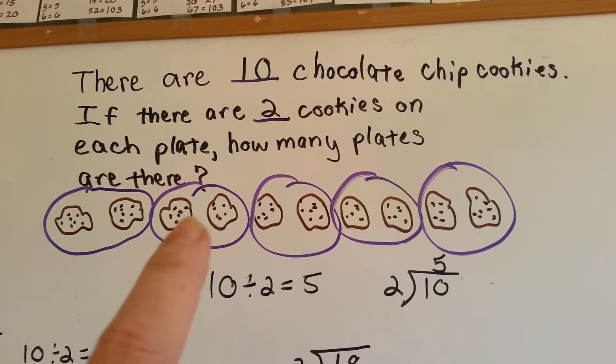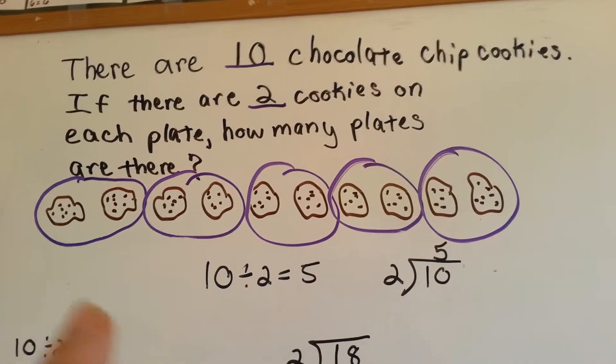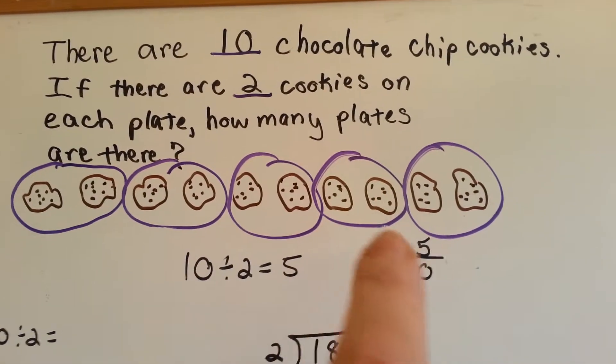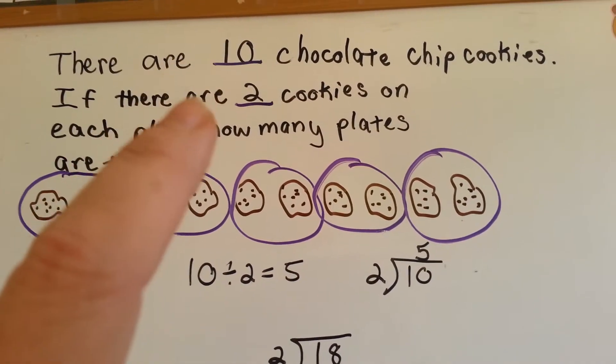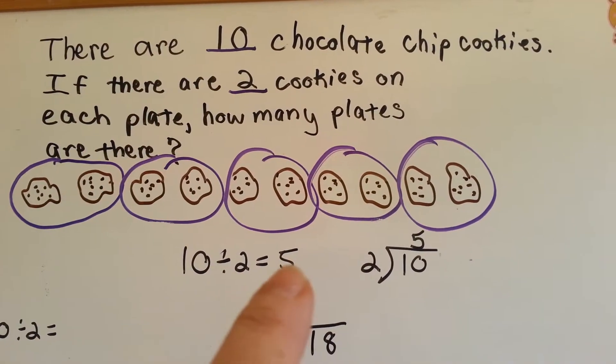So we put two cookies on each plate, and now we're going to count the plates. 1, 2, 3, 4, 5. So 10 divided by 2 equals 5.